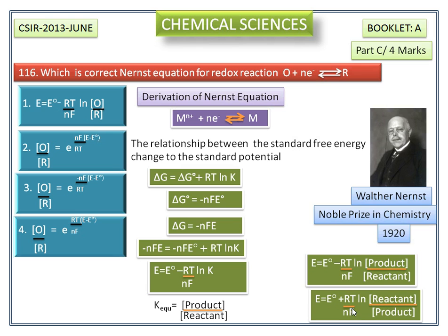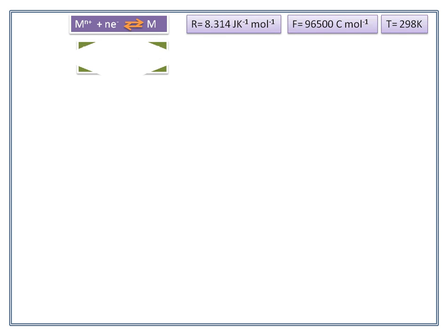These two equations are known as Nernst equation. Now we write the Nernst equation for this reversible reaction. We get E equals E° plus RT divided by nF, ln [M^n+] divided by [M].